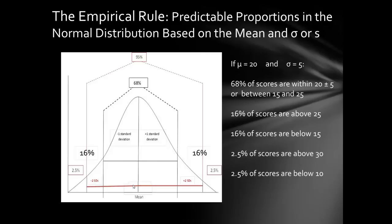For variability purposes: there are predictable proportions in a normal distribution based on the mean and standard deviation. 68% of scores fall within one standard deviation of the mean (one SD above and one SD below). 95% of scores fall within two standard deviations of the mean. 16% of scores are above one standard deviation from the mean and 16% are below. On the extreme ends, 2.5% are above two standard deviations and 2.5% are below.